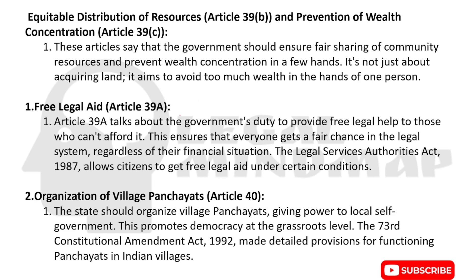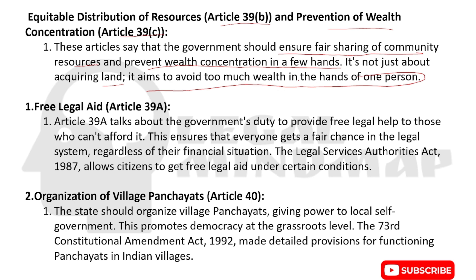On equitable distribution of resources under Articles 39B and 39C: the aim is to ensure fair sharing of community resources and prevent wealth concentration in a few hands. It's not just about acquiring land — it also aims to avoid too much wealth accumulating in the hands of one person. Resources should be distributed equally so that 80% of people also benefit, otherwise resources get wasted and not everyone gets what they need.